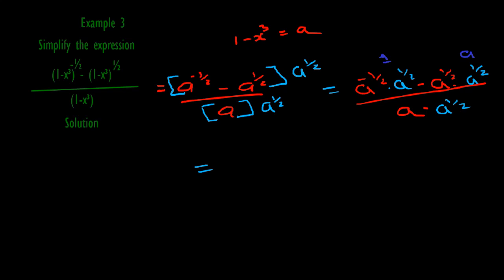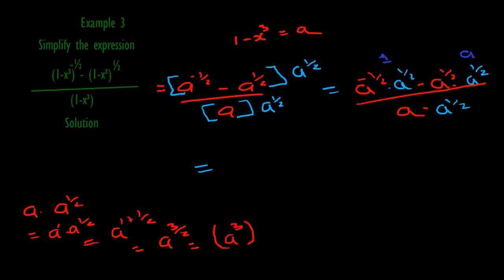In the denominator we have a times a raised to power half. Any number without a power is raised to power one, so that is a raised to power one times a raised to power half. Same base with multiplication sign, add the indices: one plus a half is three over two, which is a raised to power three over two. This can be expressed as a cubed, all raised to power a half — since three times a half is three over two — that is the third law of indices. So in the denominator we have a cubed in a bracket, all raised to power a half.